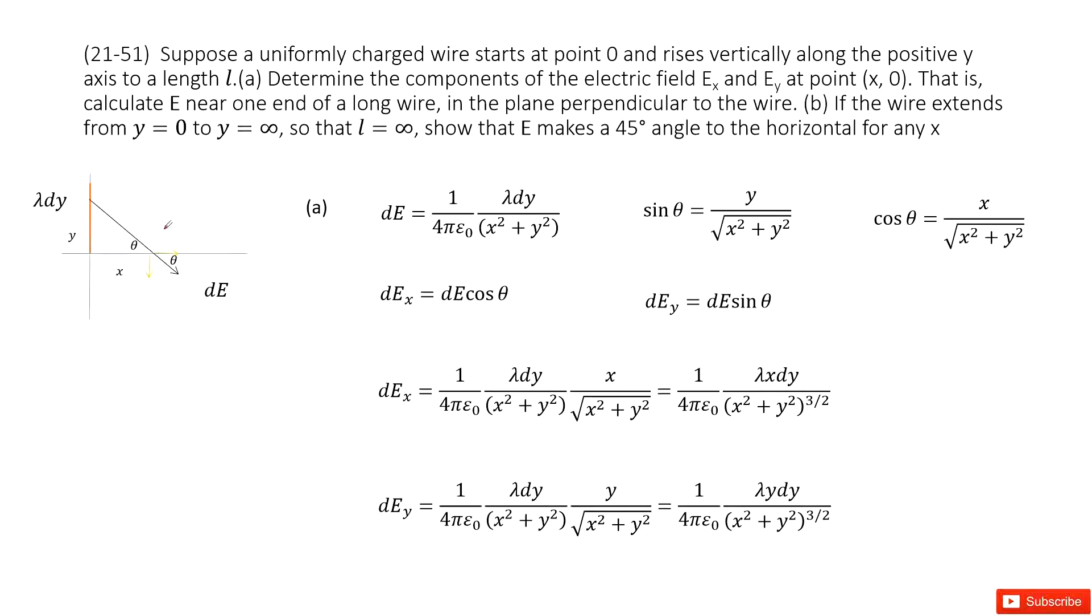Then you can continue this problem. It will tell you we have a uniformly charged wire that starts from the origin location O and rises vertically along the y-axis to length L. And then we need to determine the components of the electric field Ex and Ey at this location, where the x component is X and the y component is 0.